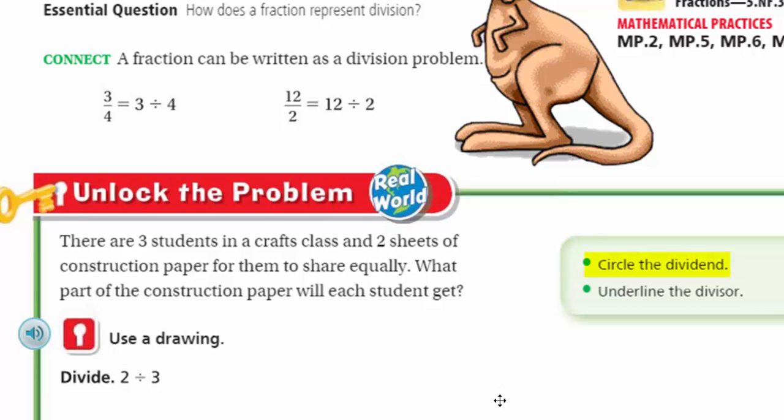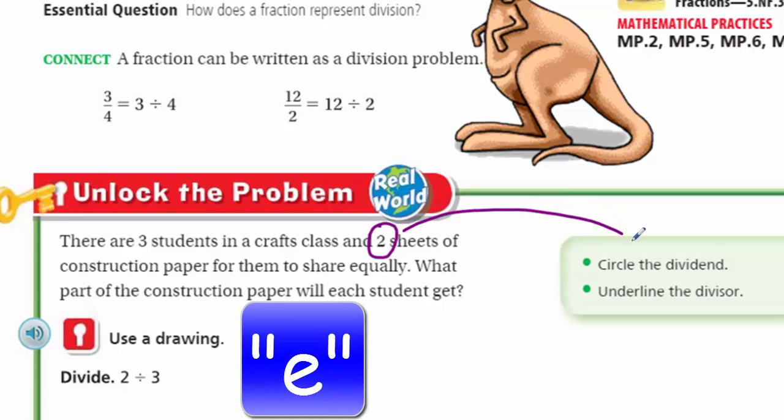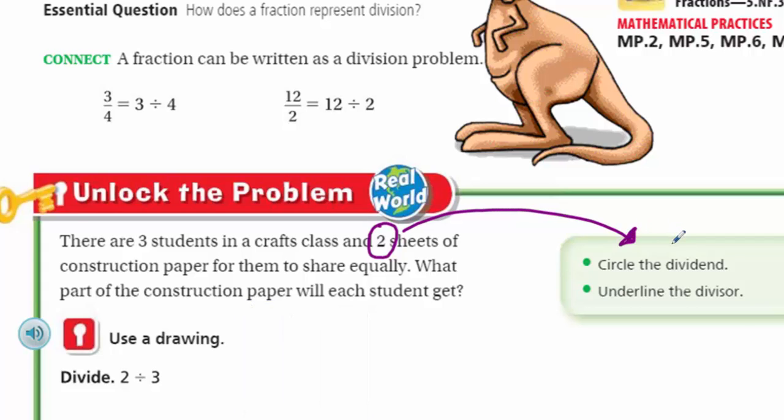So let's go ahead and circle the dividend. And the dividend here, even though that first number comes first, you may think that it's three students. But remember, dividend talks about the part that's being divided. And that, my friends, is the two sheets of construction paper. So I'm just going to circle the number two. And then it says to underline the divisor. The divisor is simply the number that is deciding the size of groups that you're going to have, or maybe the number of groups. In this case, we have three students.